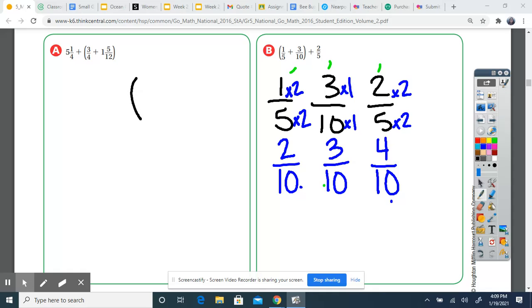So now I'm going to rewrite my problem with the denominators the same. I'm going to rewrite it over here. I've got parentheses, two tenths. I made sure to keep these in order so when I rewrite it I'm not super confused. Plus three tenths plus four tenths. So first I need to add what's in parentheses. Two tenths plus three tenths—two plus three is five tenths.